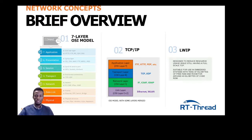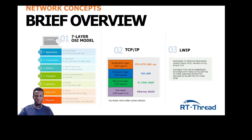The next layer is the presentation layer. It receives data from the application layer and converts it to machine-understandable formats — a process called translation. It also compresses the data to reduce the number of bits required for transmission, making it faster and less resource-intensive. It is also responsible for data encryption and decryption.